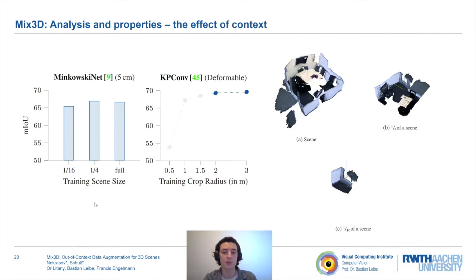We observe similar behavior with a point-based model such as KPConv. Our experiments indicate that increasing the crop, or patch-scene size, and thus the context, is in general helpful. However, only up to a certain point at which overfitting to context limits performance.